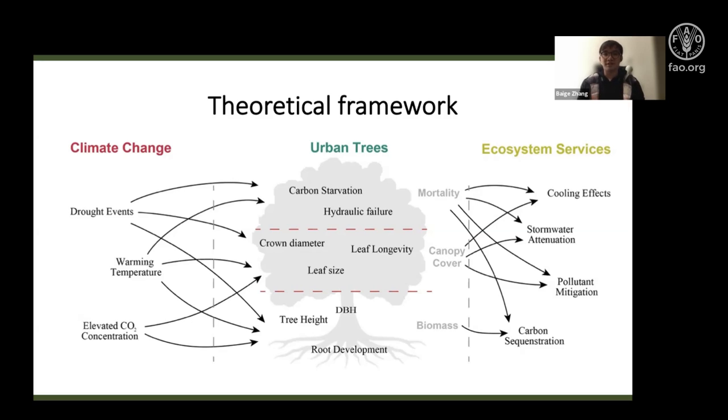We tried to figure out if drought events, warming temperature, elevated CO2 concentrations will affect the tree growth and vitality, if they can lead to some mortality mechanisms like carbon starvation or hydraulic failure, and how the characteristics of urban trees can affect the capacity of ecosystem services delivery.